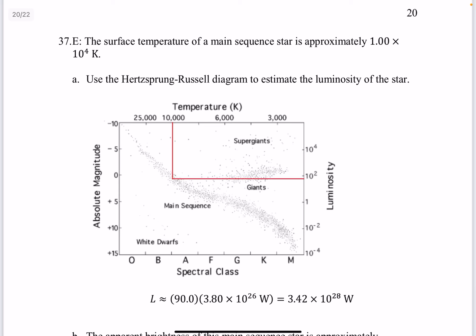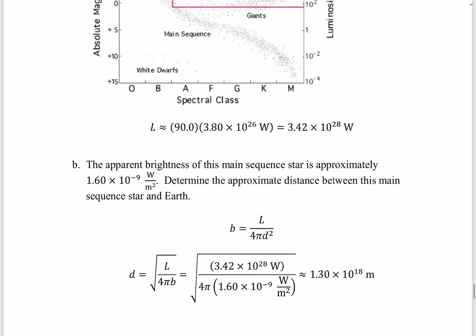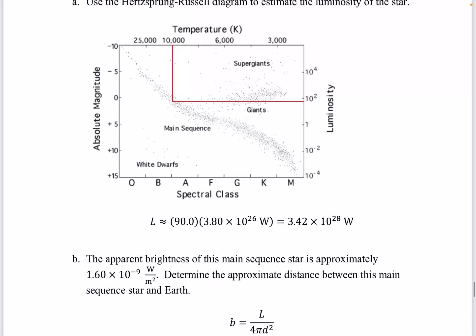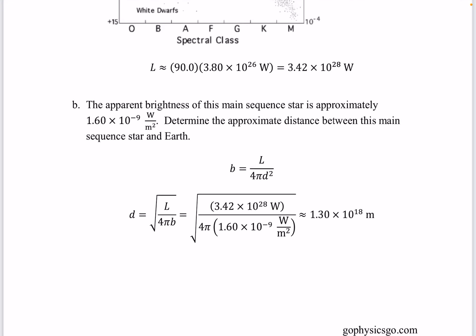Question 37. The surface temperature of a main sequence star is approximately 1 times 10 to the 4k. Part a. Use a Hertzsprung-Russell diagram to estimate the luminosity of the star. We got something just under 100, right? So I just assumed that it was 90. So that's your answer for part a. Part b. The apparent brightness is approximately 1.6 times 10 to the minus 9 watts over meters squared. Determine the approximate distance between this main sequence star and Earth. We're going to use b equals l over 4 pi d squared and solve for d.